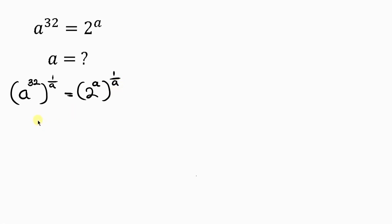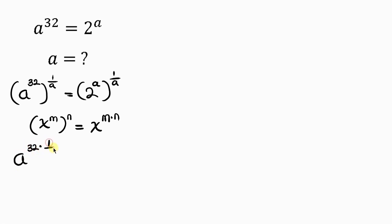Our next step is to apply the law of indices, which says when I have x to the m raised to the n, the powers multiply, so that expression becomes x to the m times n. Applying this here, we get a to the 32 times 1 over a on the left, equal to 2 to the a times 1 over a on the right. Notice that a cancels a, so on the left 32 times 1 over a gives a to the 32 over a, equal to 2 to the 1 on the right.